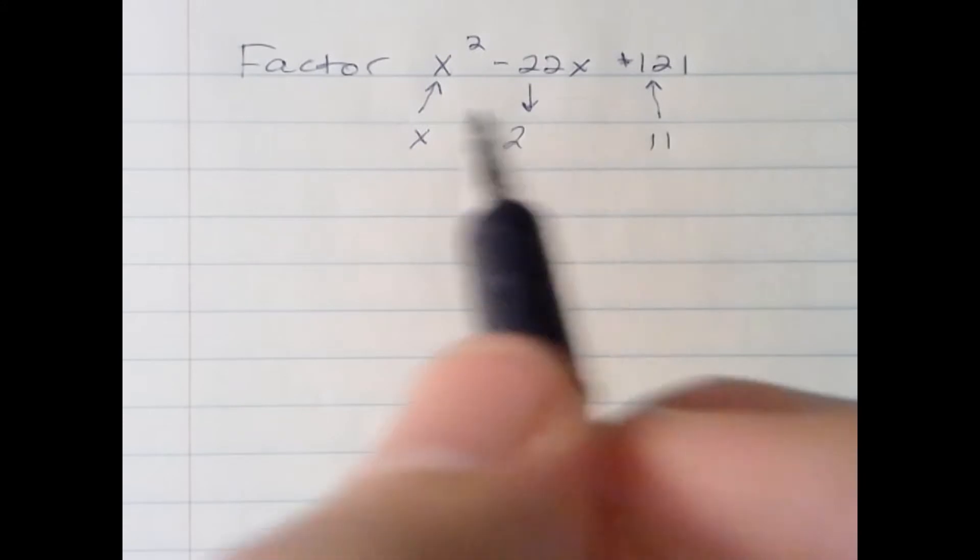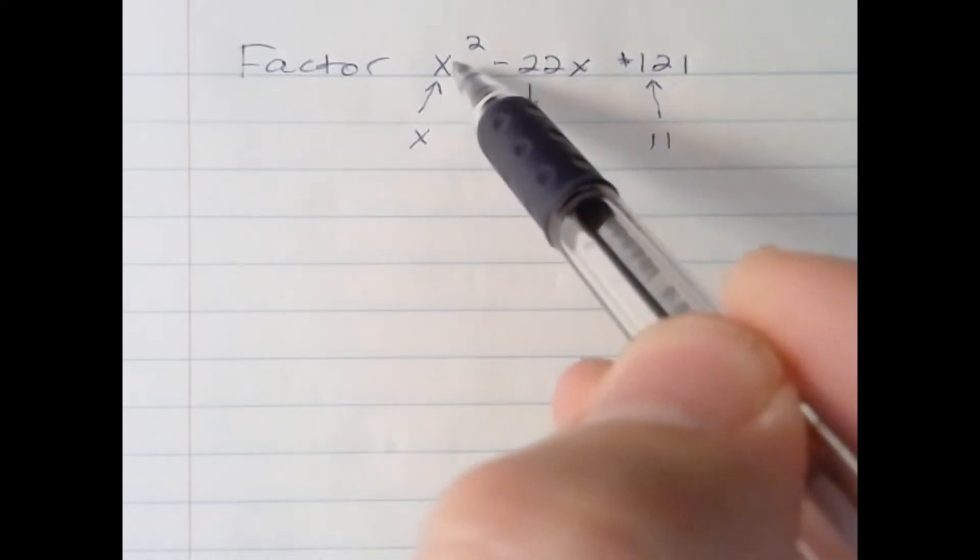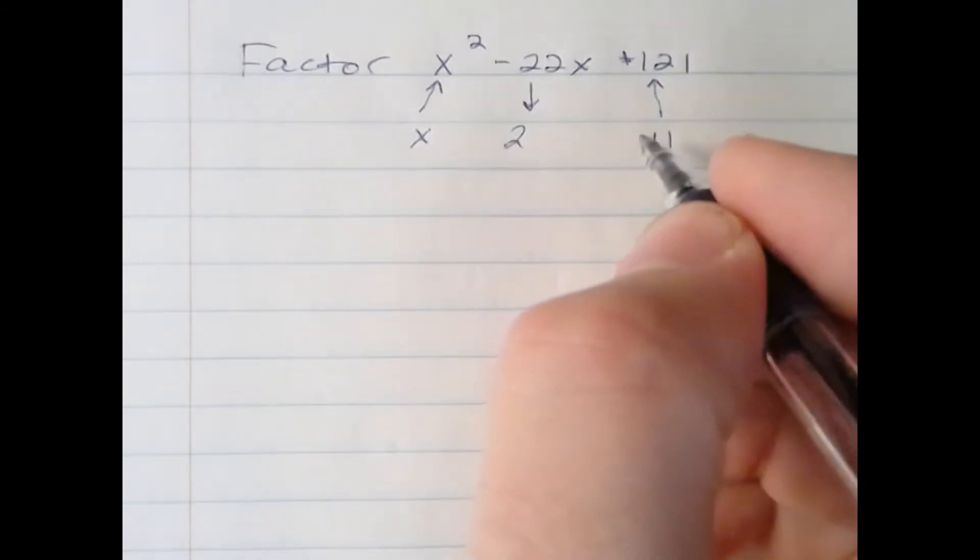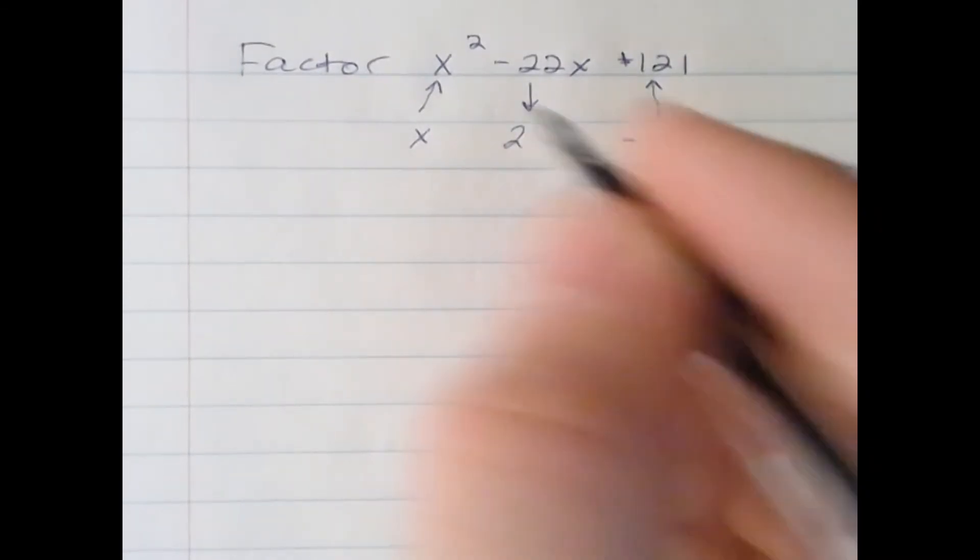So if you see that the square root of x squared is x, and the square root of 121 is 11, which could also be negative 11, which it will be in this case,